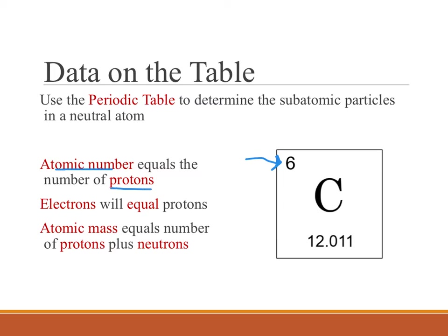So C for carbon, our atomic number of six, tells us that we have six protons. And if this is a neutral atom, it's not an ion, then we know that our electrons will be equal to the protons, or in this case, we will also have six electrons to go along with those six protons.